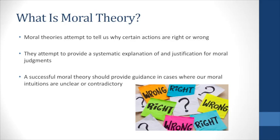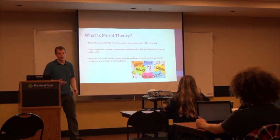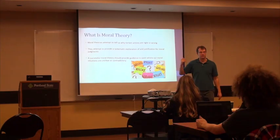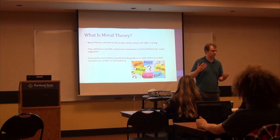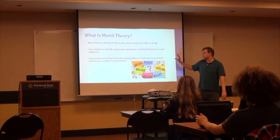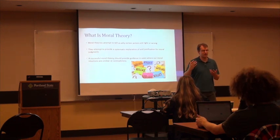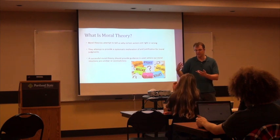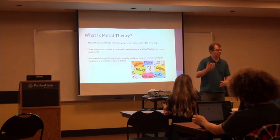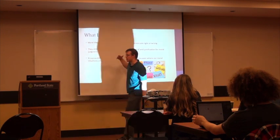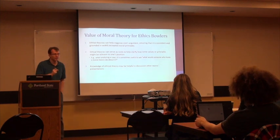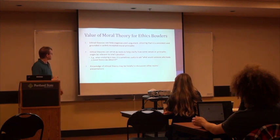But what is moral theory? Moral theories tend to tell us why certain actions are right or wrong — they give a general explanation of rightness and wrongness. They try to give a systematic explanation and justification for moral judgments. We make probably tens of thousands of moral judgments, and a theory should be able to take all of those and explain why they're moral. It should also provide guidance in cases where our moral intuitions are unclear or contradictory. The whole point of having a theory is that when we run into hard cases, a moral theory, because it's systematic and has accounted for many different judgments, will help us make sense of those. I don't think ethics bowl participants need to focus a lot on moral theories, but I think they can be very helpful.